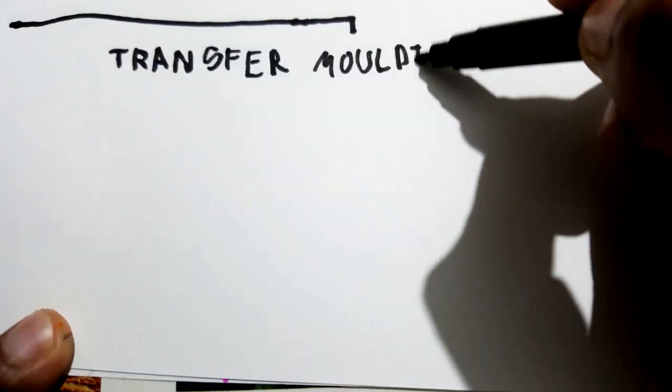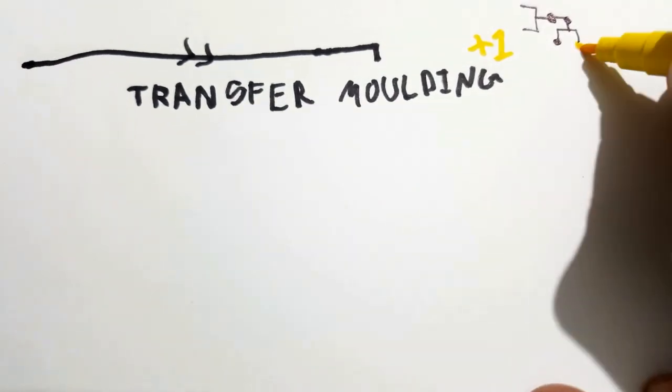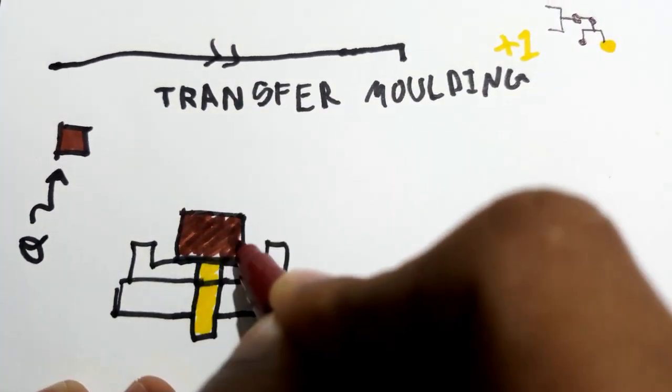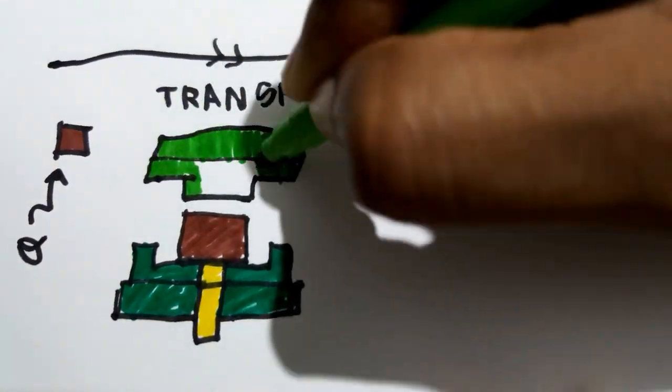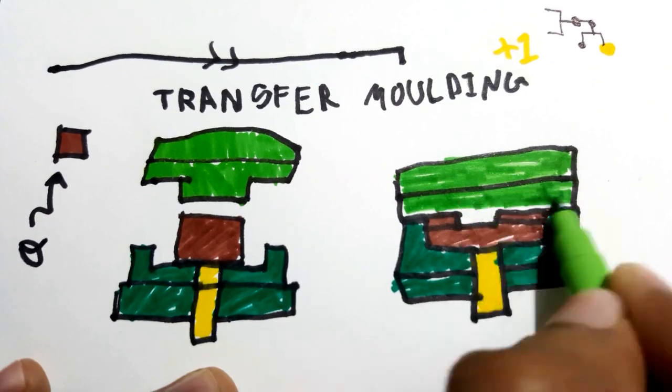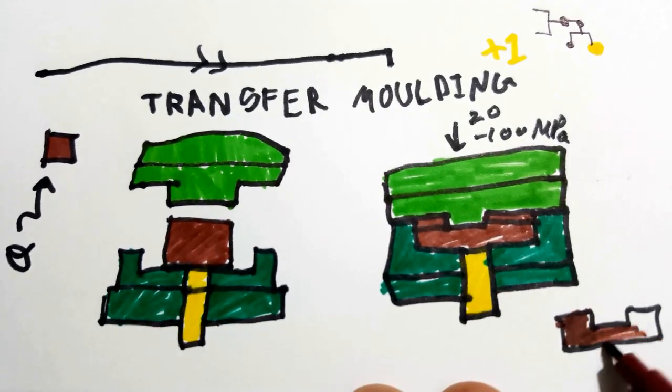Another type of thermosetting polymer processing is transfer moulding, which is an advanced method of compression moulding. The material is generally preheated and placed in the lower half of the mould. The upper part of the die applies a pressure of 20 to 100 MPa and once cured, the material part is ejected.